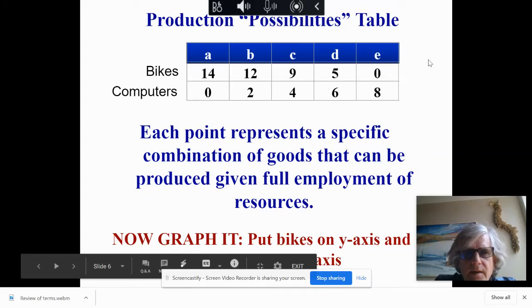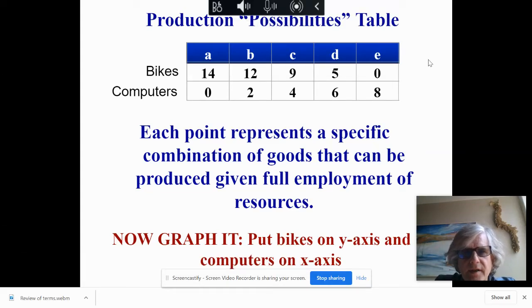The production possibilities table. Typically this is what you're going to see. You're going to see a table of possible production for different combinations.